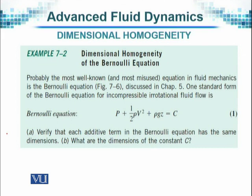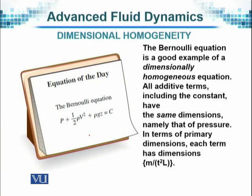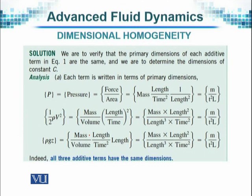When we say the same dimension, we mean the primary dimensions that we have defined. The question is: verify that each additive term in the Bernoulli equation has the same dimension, and what are the dimensions of constant C? The right-hand side should have the same dimension as each term on the left-hand side, because that is the rule. If it is not so, we have a problem. The Bernoulli's equation is p plus half rho v square plus rho gz, and its dimensions can be calculated, which are not very difficult.